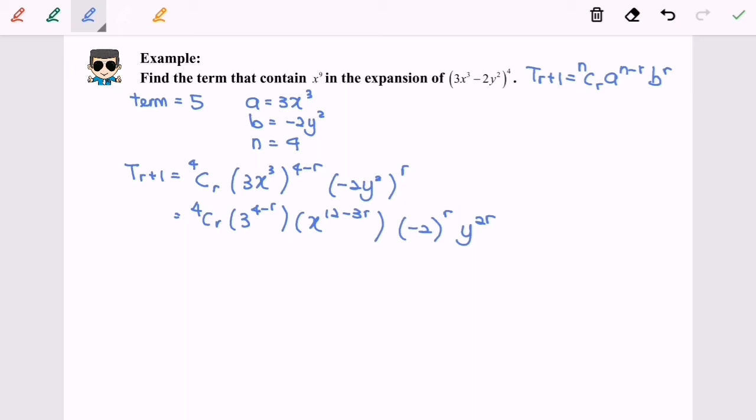We can further simplify or we can straightforward by determining the value for r by comparing the indices x^(12-3r). Actually we have to equate with x^9. So after we compare, 12 - 3r = 9, so r will be equal to 1.